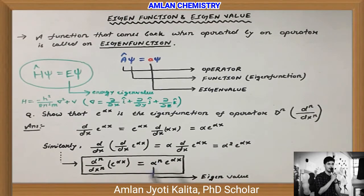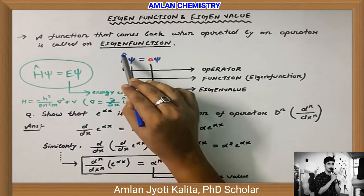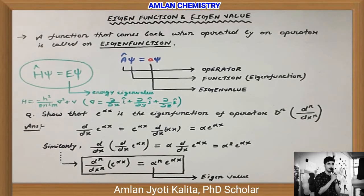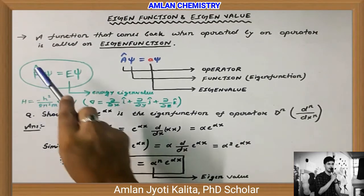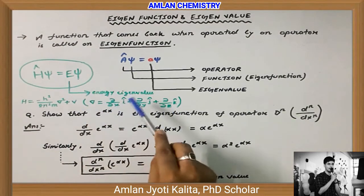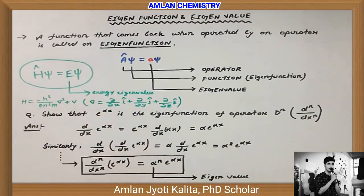Isliye e^(αx) ek eigenfunction hoga, aur yeh jo α^n hai isko hum log eigenvalue bolenge. Phir se summarize karte hain: koi bhi ek function jiske upar koi bhi operator operate karne ke baad wapas wohi function mile multiplied by a particular value, toh us function ko eigenfunction bolenge, us value ko eigenvalue bolenge, aur us equation ko eigenvalue equation bolenge. Quantum chemistry mein most commonly use hone wali eigenvalue equation Schrödinger equation hai: H-cap Ψ = EΨ, where H-cap Hamiltonian operator hai, jo wave function ke upar operate karne ke baad same function multiplied by energy eigenvalue deta hai.